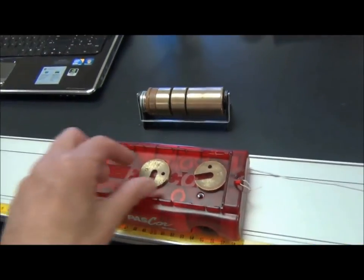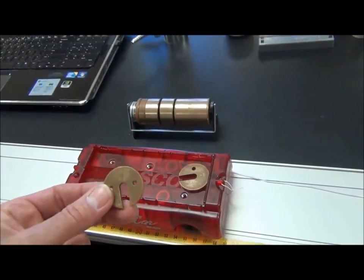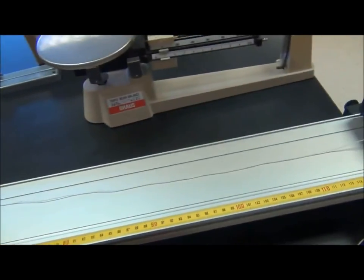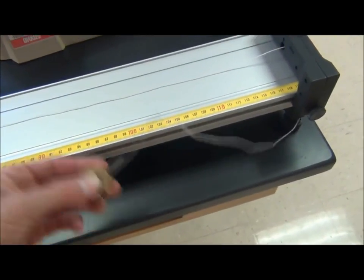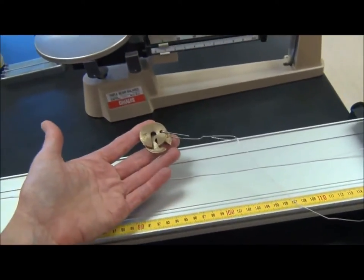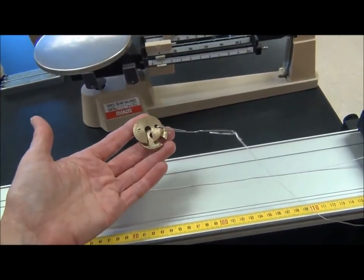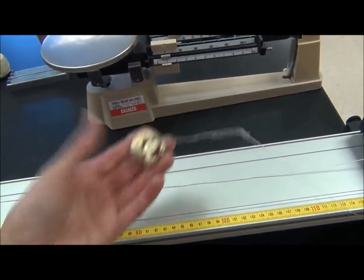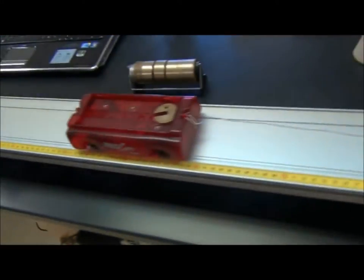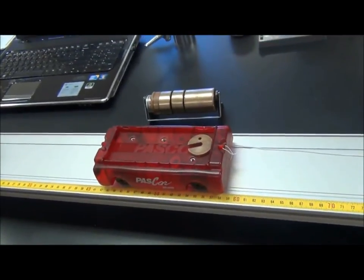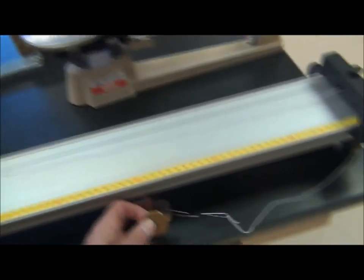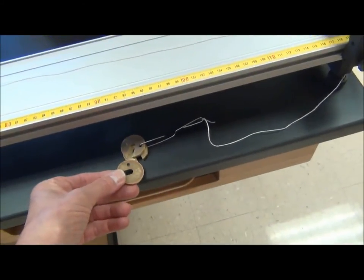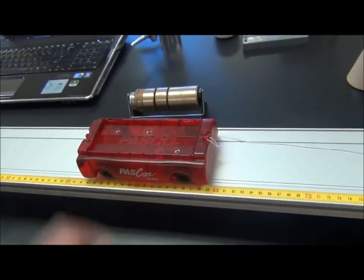The lab continues by having you remove 20 grams from the pascar. Attach that to the paper clip. Once you've attached it to the paper clip, you will re-weigh or gain the mass of the paper clip and the brass masses. Get a new mass for the pascar. The third trial will have you remove the remaining 20 gram mass. Attach it to the paper clip. Re-weigh this. Also re-weigh the car.